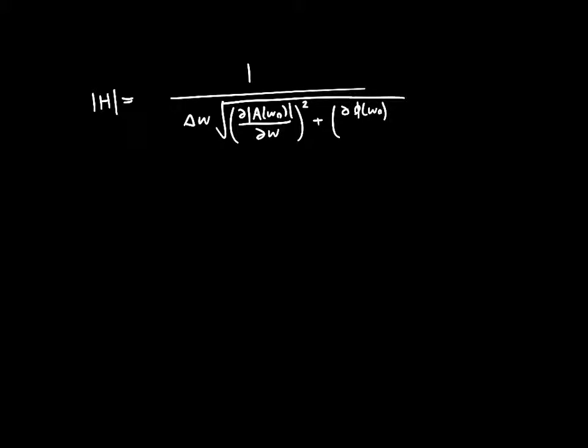So the last video we derived an expression for the transfer function of an oscillator, or the phase noise if you will, and we saw that the magnitude of the transfer function is equal to 1 over delta omega times the square root of the derivative of the magnitude of A evaluated at the resonant frequency squared, plus the derivative of the phase with respect to omega squared, evaluated at omega naught.